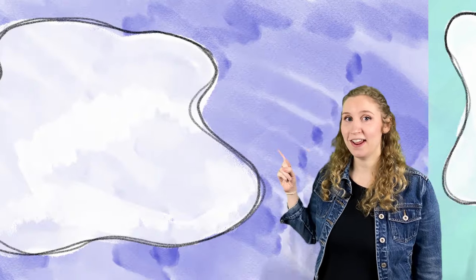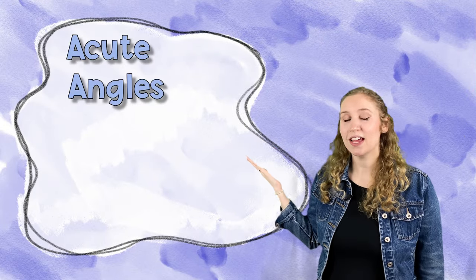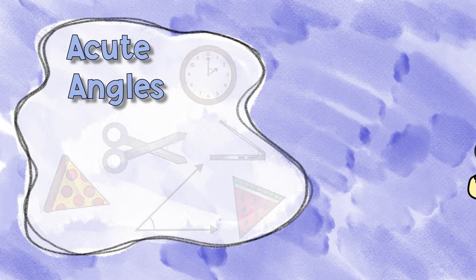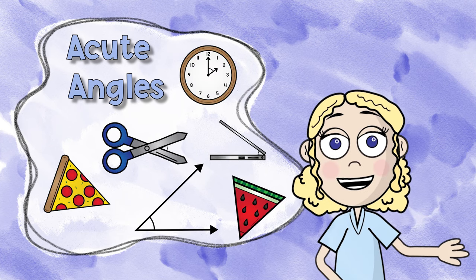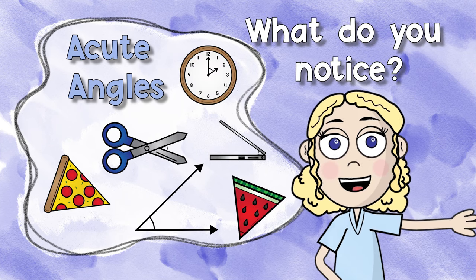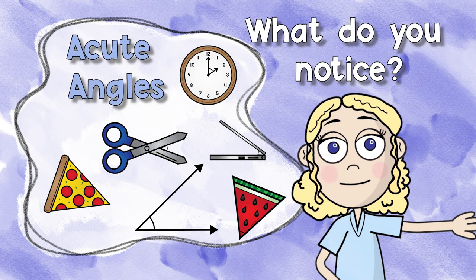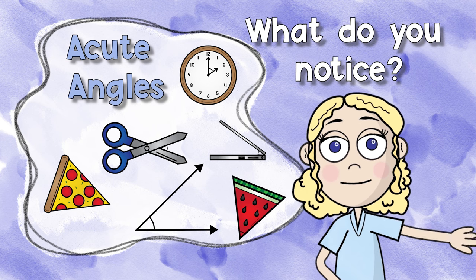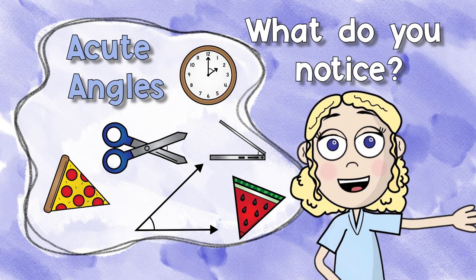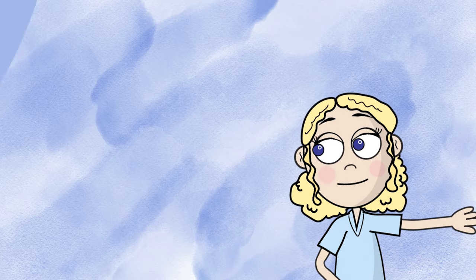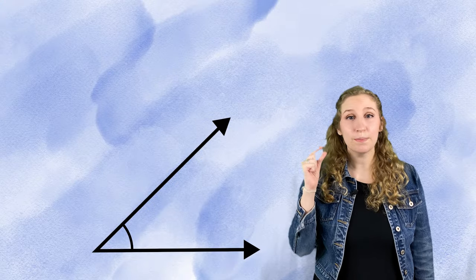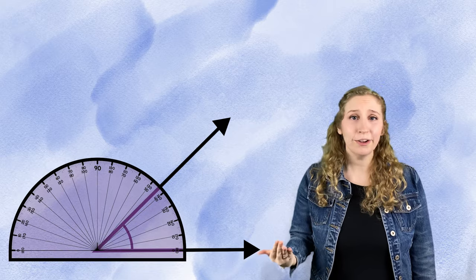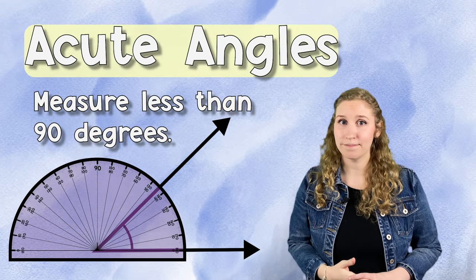Let's start with an acute angle. Here are a few examples of acute angles. What do you notice? What's similar and what's different? What do all of these angles have in common? That's right, they have a smaller angle. Acute angles are less than 90 degrees when you measure them.